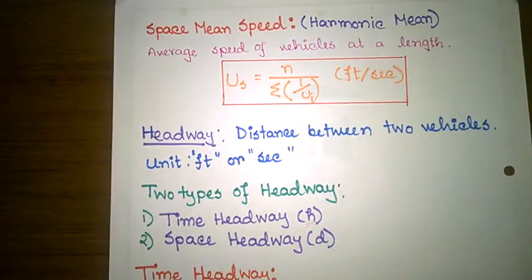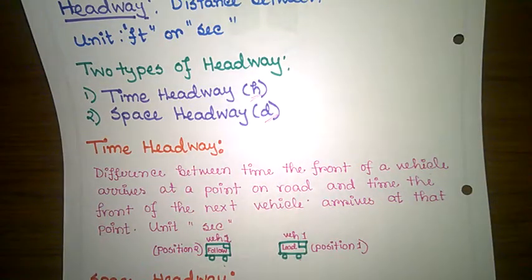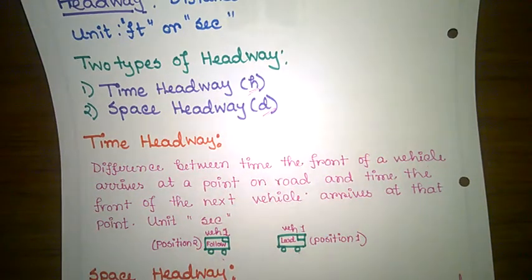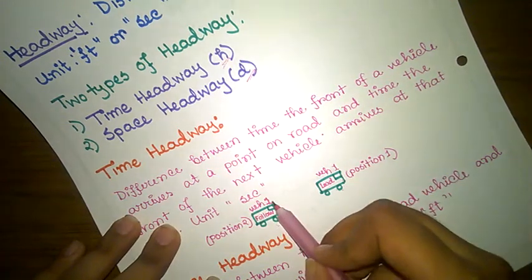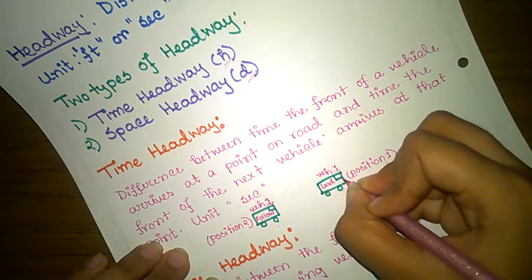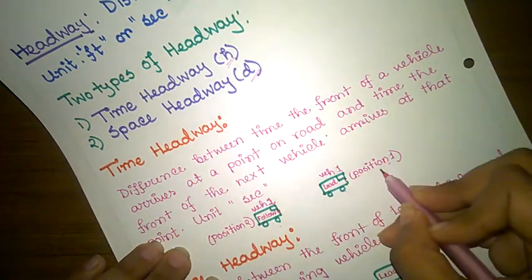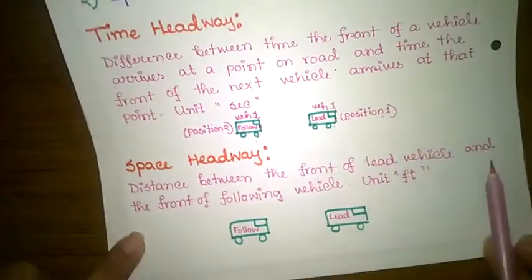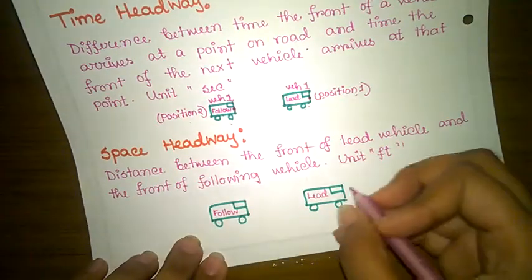Time headway is the time between when the front of one vehicle passes a fixed point on the road and when the front of the next vehicle arrives at that same point; this unit is seconds. Here we have a figure: we can see vehicle 1 as the lead vehicle and vehicle 2 as the following vehicle. The diagram shows lead vehicle position 1 and following vehicle position 2, illustrating time headway and space headway — the distance between the front of the lead vehicle and the front of the following vehicle, with the unit being feet.